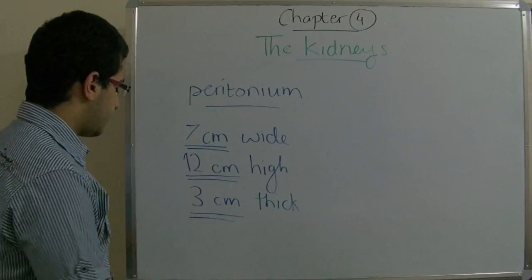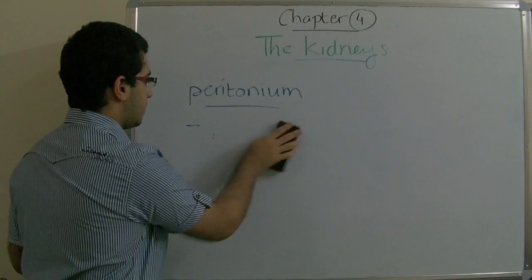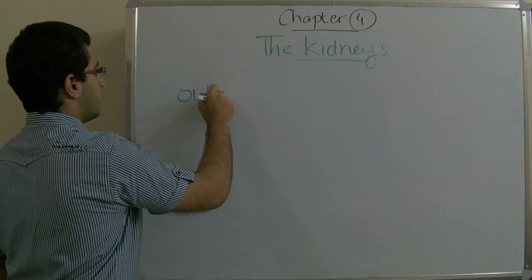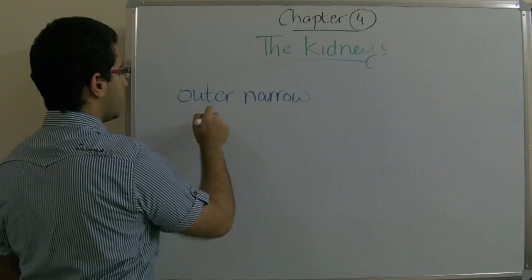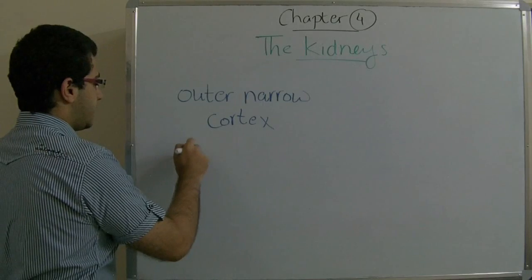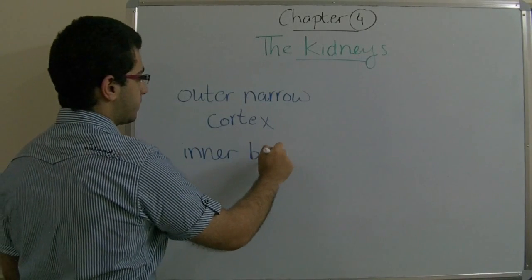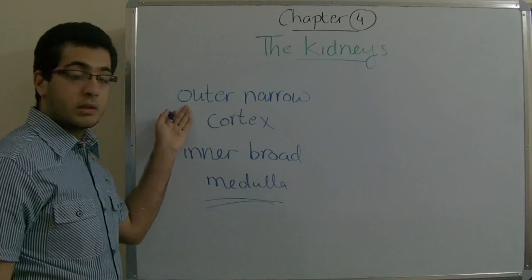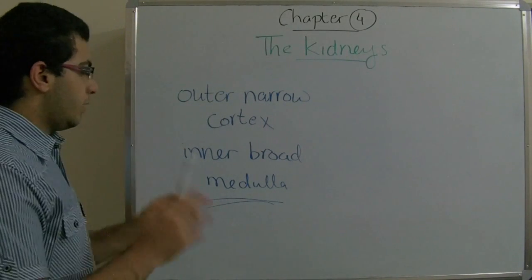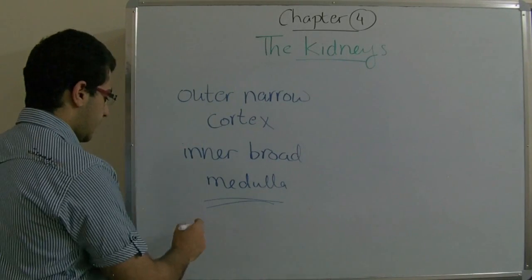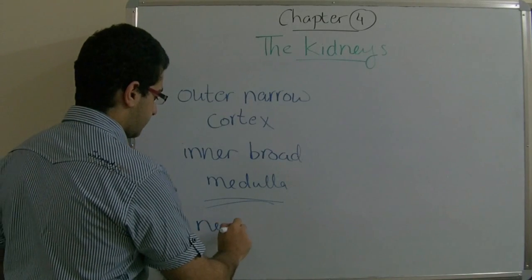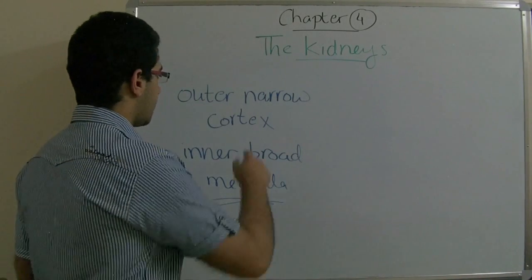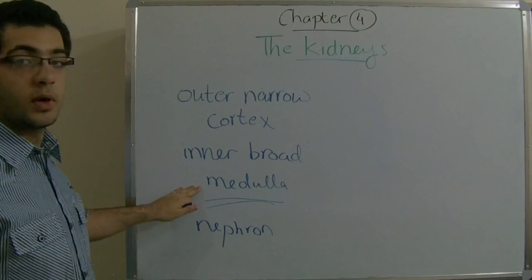The kidney is divided from the inside into two regions: an outer narrow cortex and an inner region called the medulla. The unit of function inside the kidney is called the nephron. The upper part of the nephron is found in the cortex and its inner part is in the medulla.